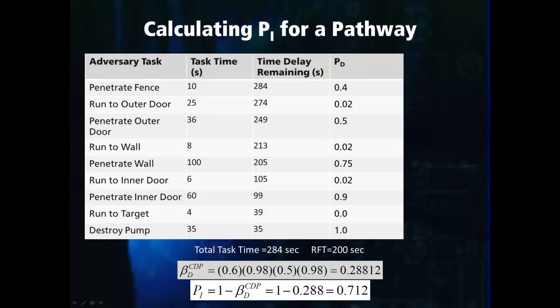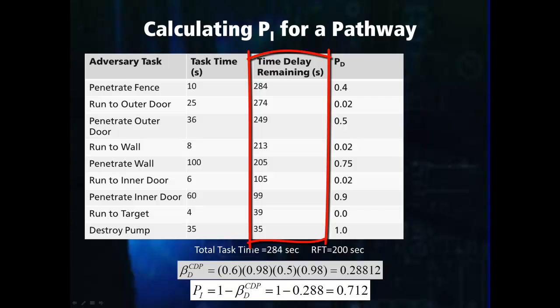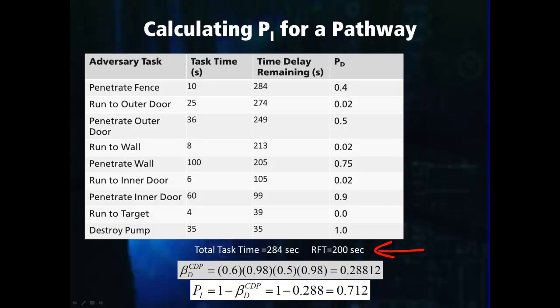Now we will go through an example pathway to demonstrate how to calculate the probability of interruption. In the table, you can see a list of tasks with their associated task times and detection probabilities. In the middle column, we have the total amount of time remaining for the adversary to complete their attack after they complete each task. The first step is to find the critical detection point. For this, we need the response force time, signified by RFT at the bottom of the table, which has a value of 200 seconds.